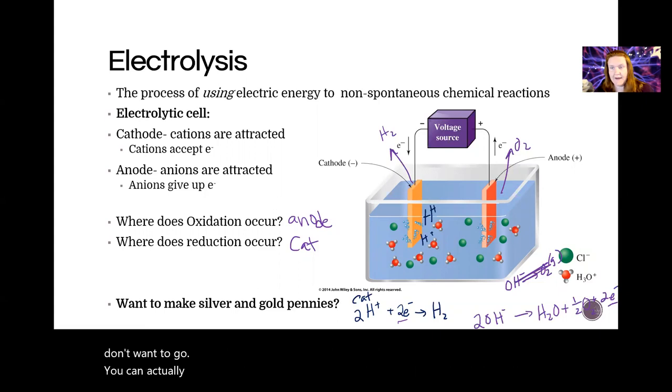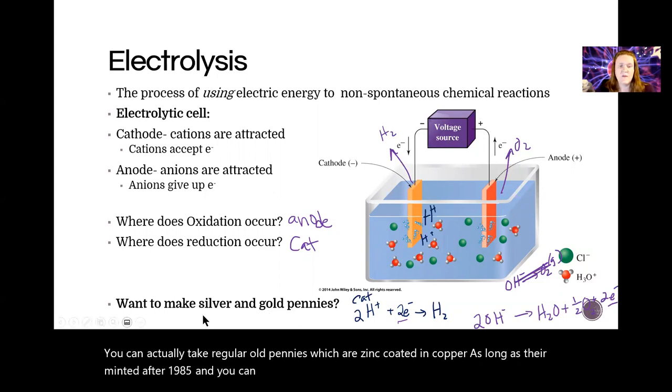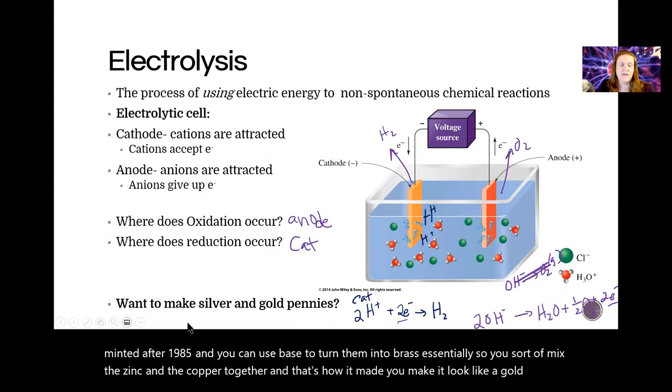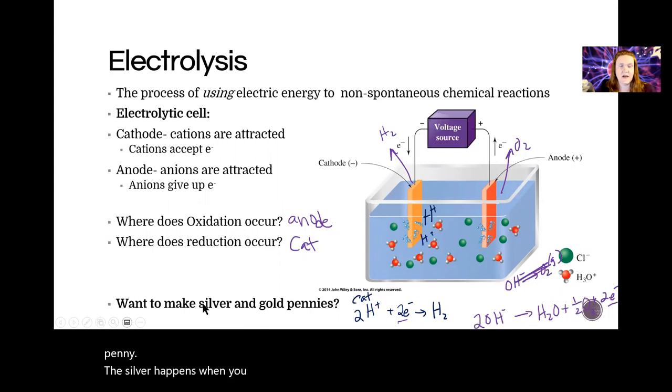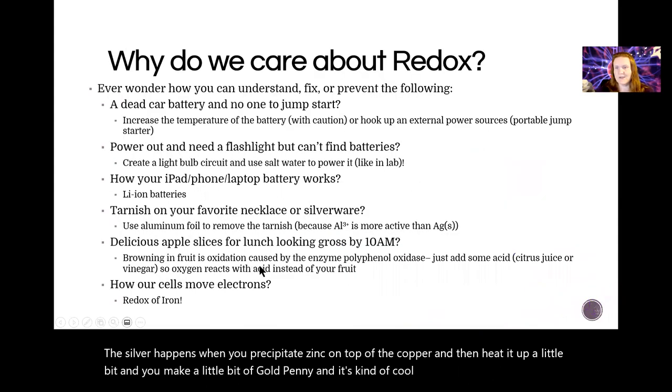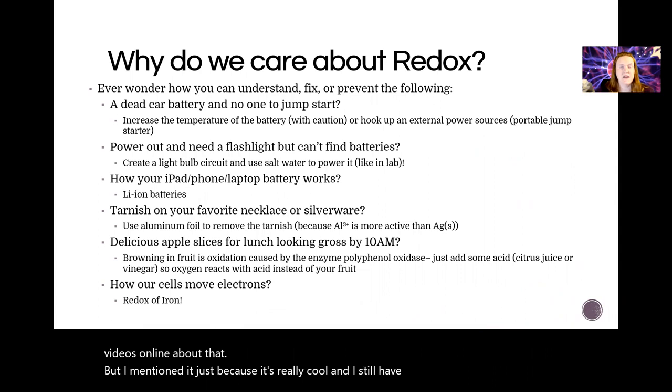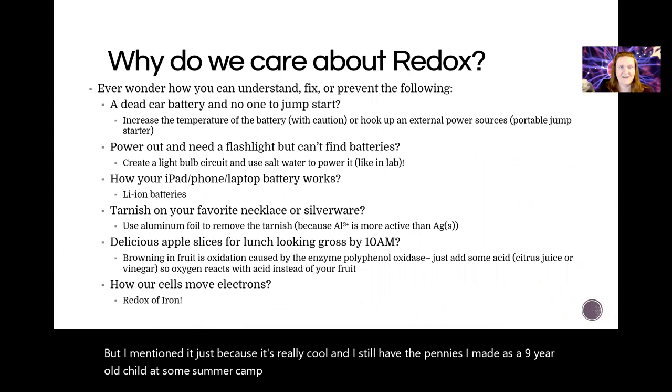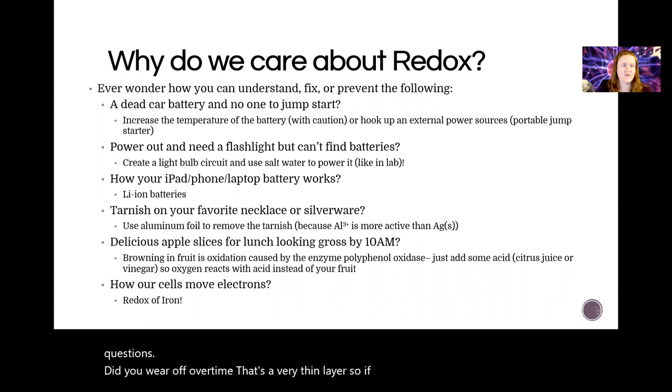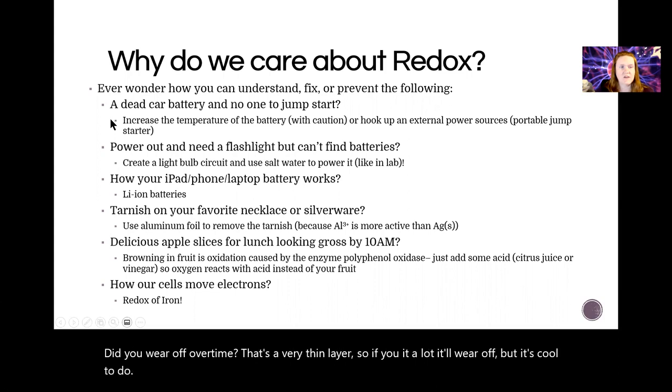You can actually take regular old pennies, which are zinc coated in copper, as long as they're minted after 1985, and you can use base to turn them into brass essentially. So you sort of mix the zinc and the copper together. And that's how you make it look like a gold penny. The silver happens when you precipitate zinc on top of the copper. Then you heat up a little bit and you make a little bit of gold penny. And it's kind of cool. You can find all kinds of videos online about that. But I mention it just because it's really cool. And I still have the pennies I made as a nine-year-old child at some summer camp thing that my mom sent me to because I don't stop asking questions. They do wear off over time. It's a very thin layer. So if you rub it a lot, it'll wear off. But it's kind of cool to do. Please adhere to all chemical safety rules if you do this at home.